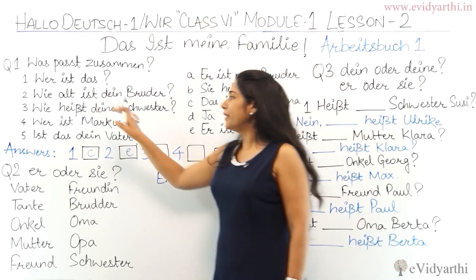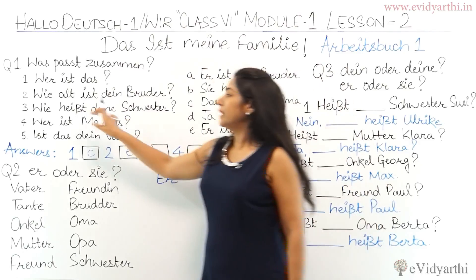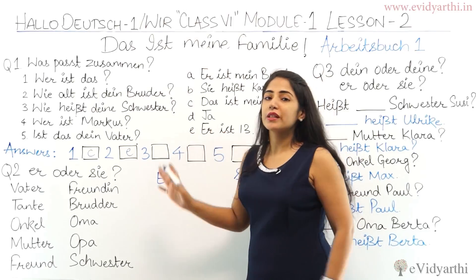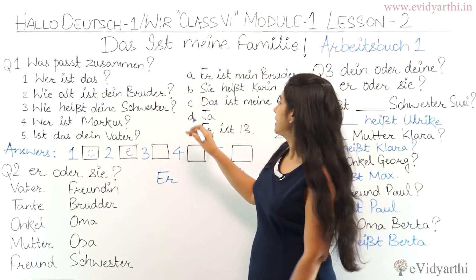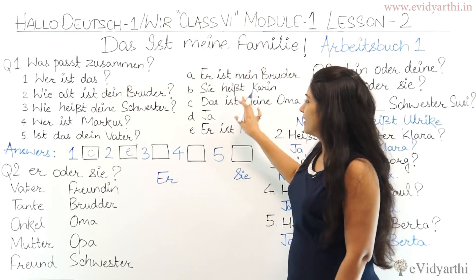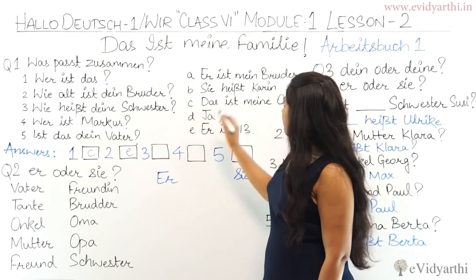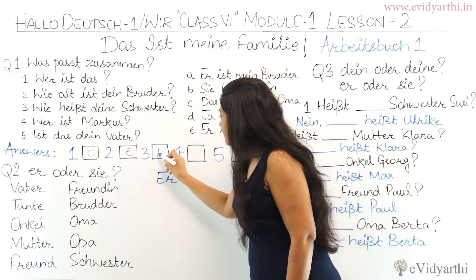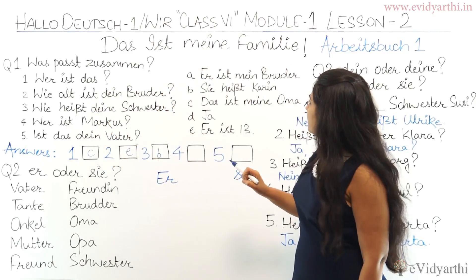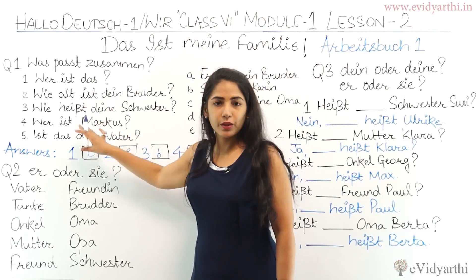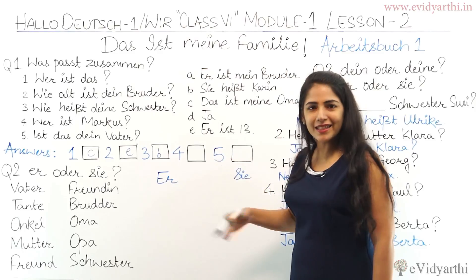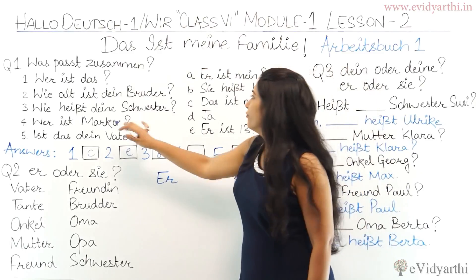Third: 'Wie heißt deine Schwester?' — 'Wie heißt' means the name should be there, because we are asking 'What is the name of your sister?' So look for it — 'Sie heißt Karin,' 'Her name is Karin.' So number three is B. Fourth: 'Wer ist Markus?' — 'Who is Markus?' — 'Er ist mein Bruder,' 'He is my brother.' So number four is A.